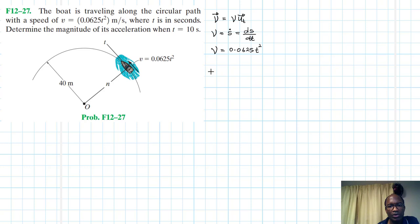We also know that our acceleration as a vector is equal to at times the unit vector in the t direction, which is tangential to the curve, plus an times the unit vector in the normal direction, the n direction.